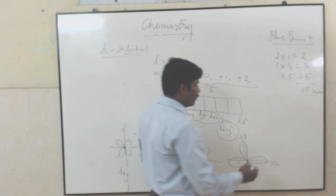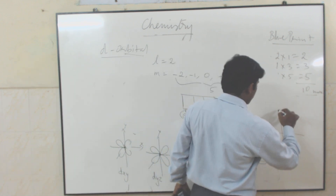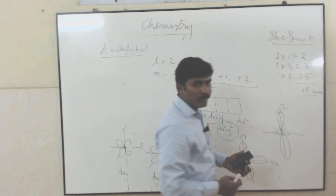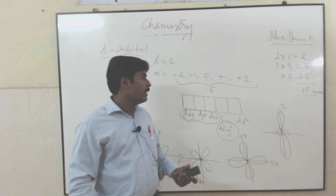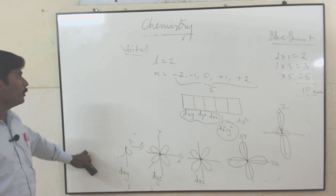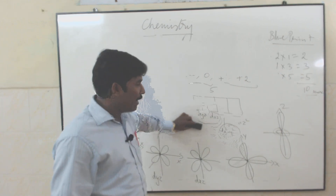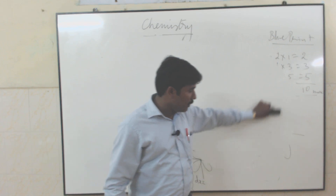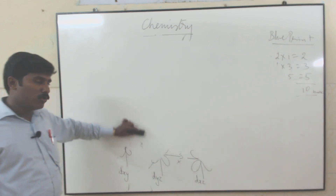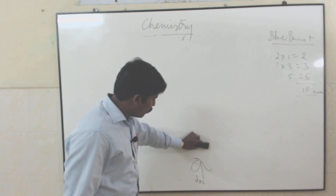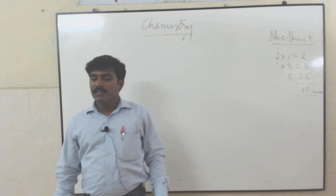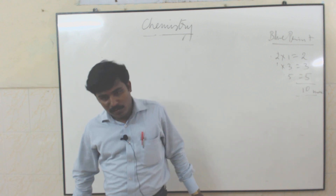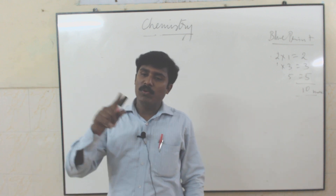dz² comes only along the z axis, with the nodal plane here. So to summarize: s orbital is symmetrically spherical in shape; p orbitals are dumbbell in shape. For s orbital, nodes are found using the n minus 1 formula — 2s has 1 node, 3s has 2 nodes, 4s has 3 nodes, 5s has 4 nodes. For s orbital, l equals 0 and m equals 0, so no orientation — only 1 orbital.